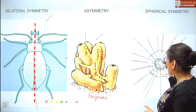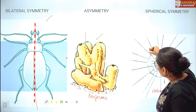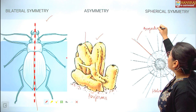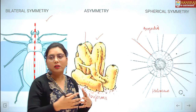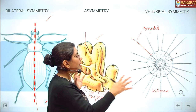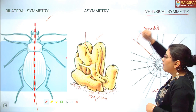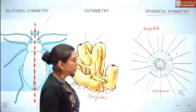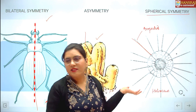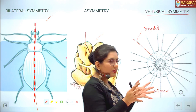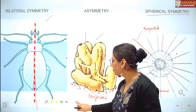In certain unicellular groups — like heliozoans with straight-axis pseudopodia called axopodia — any plane passing from the centre divides the body into equal halves; that is spherical symmetry. Within Bilateria and Radiata, some organisms may modify to have asymmetry or spherical symmetry, but metazoans are broadly grouped into Radiata and Bilateria.